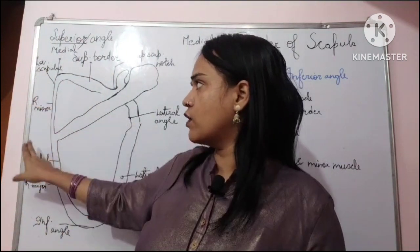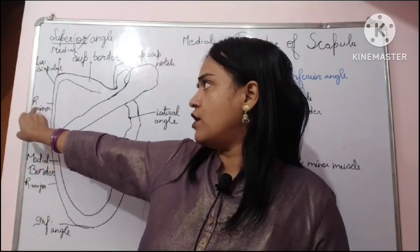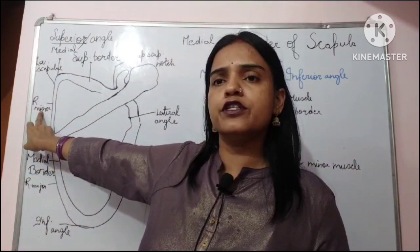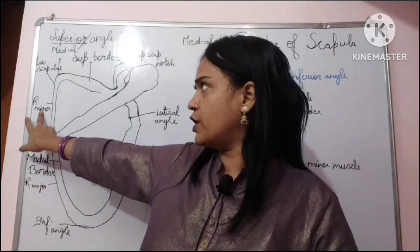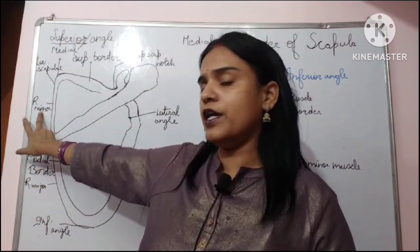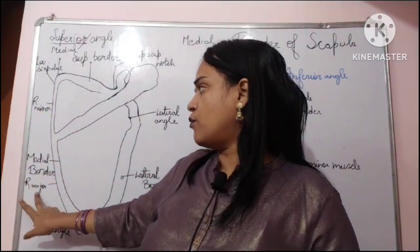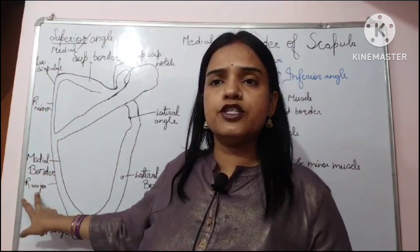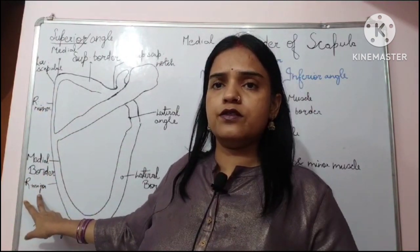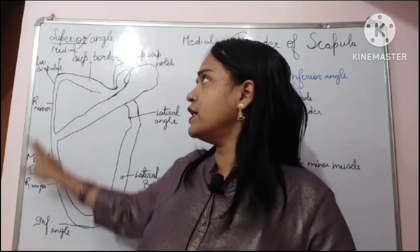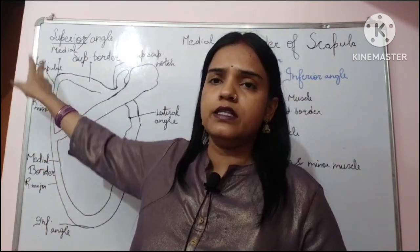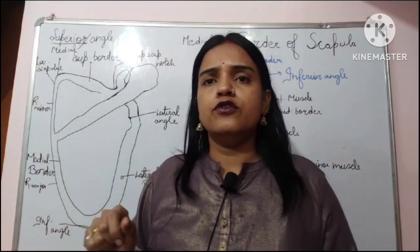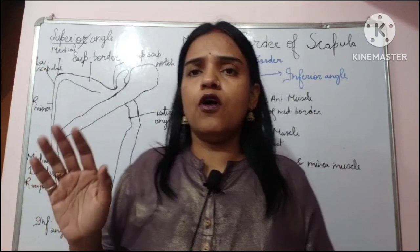You can see the locations: rhomboidus minor arises from the upper end, rhomboidus major arises from the lower end, and levator scapulae is at the top of the medial border.